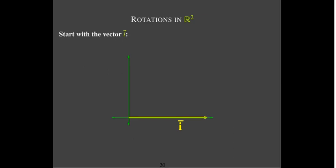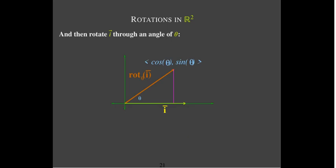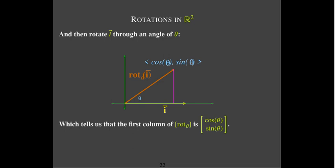We're going to start with the vector i. Remember, it's a unit vector running parallel to the positive x-axis. Let's rotate it through an angle of theta. We've gone through an angle of theta and we've got a right triangle. i is a unit vector, so the hypotenuse is 1. That means the length of the opposite side is sine theta, and the length of the adjacent side is cosine theta. So the x component of the rotated vector is cosine theta, and the y component is sine theta. That tells me that ROT_theta of i is (cosine theta, sine theta), which is the first column of the standard matrix.